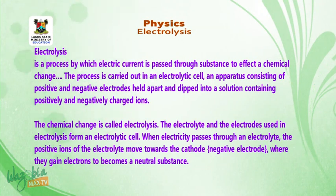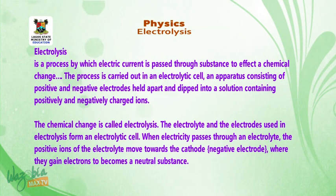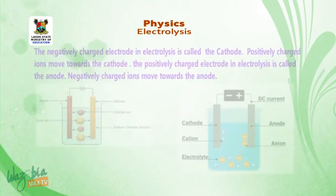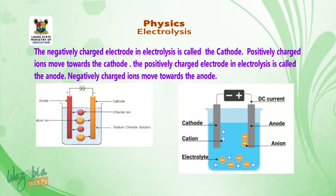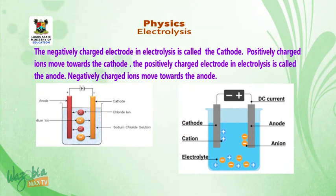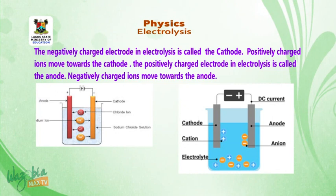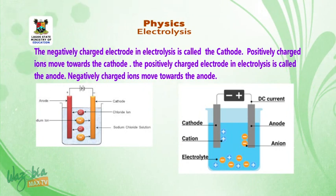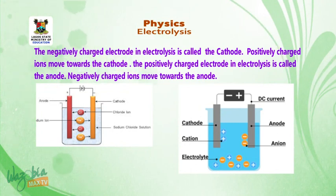When electricity passes through an electrolyte, the positive ions move towards the cathode (negative electrode), where they gain electrons to become a neutral substance. The negatively charged electrode in electrolysis is called the cathode, and the positively charged ion moves towards it. The positively charged electrode is called the anode, and the negatively charged ion moves towards the anode.